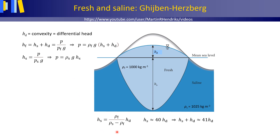This relation is true at every location along the interface of the fresh and saline groundwater. It is known as the Ghijben-Herzberg relation, after the Dutch engineer officer Ghijben and the German engineer Herzberg. If we take rho_F equal to 1000 kg per cubic meter and rho_S equal to 1025 kg per cubic meter, the equation reduces such that the thickness or depth of a freshwater aquifer under hydrostatic equilibrium conditions, H_s plus H_D, equals approximately 41 times H_D. H_D is called the convexity or differential head — the difference in altitude between the top of the water table and the open water surface, i.e., sea level.